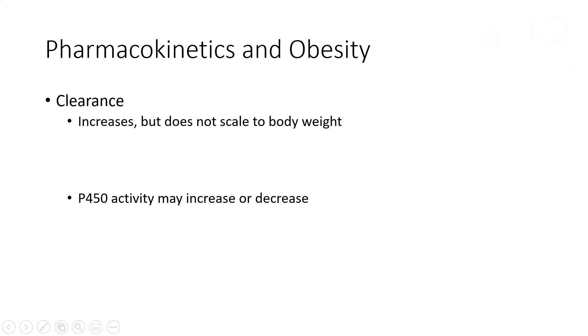Not only is volume of distribution changed in obesity, but clearance is also altered. Generally clearance increases, but not in a linear relationship — it does not scale to body weight. P450 activity may actually increase or decrease in these patients. Evidence has shown that 3A4 activity decreases in the obese patient population, whereas 2E1 activity may actually increase. Thank you for your time. I hope this introductory lecture gave you a good overview of what's to come in Module 4, the Pharmacokinetics and Drug Therapy in Special Populations module for the NIH Principles of Clinical Pharmacy course.